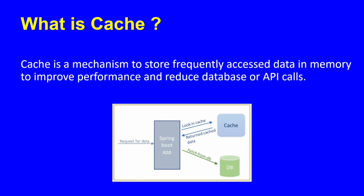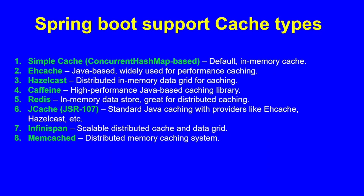The frequently retrieved data can be stored in the cache and the same thing can be retrieved directly from the cache instead of fetching from the database, file store, or external system. The advantage of cache mechanism is it's lightweight — we are not going to make any heavyweight calls, reducing database API calls or calls to external systems. That is the main advantage of the cache mechanism.